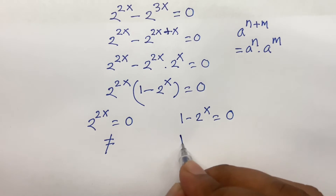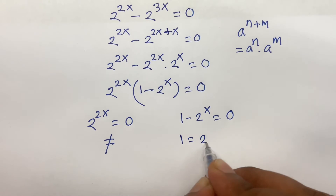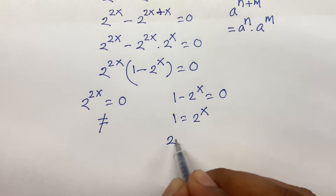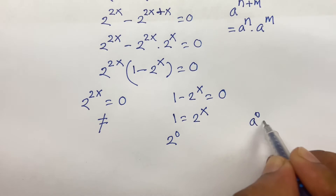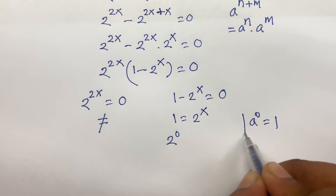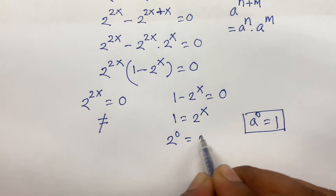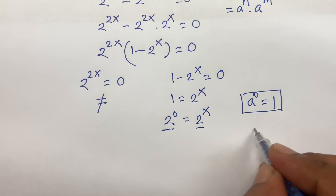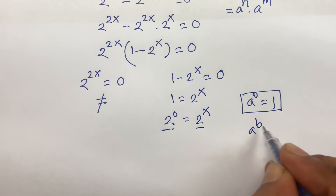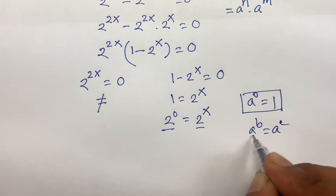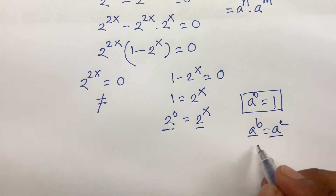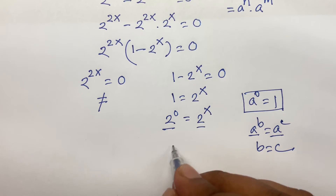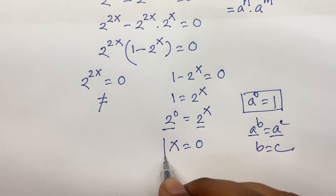Then, here is 1 is equal to 2 to the power x. I can say 1 is 2 to the power 0, because a to the power 0 is equal to 1. So I can say here is 2 to the power 0 equals 2 to the power x. The bases are the same. We know that if a to the power b equals a to the power c, then b equals c. So, x is equal to 0.